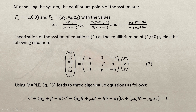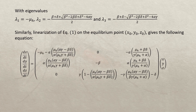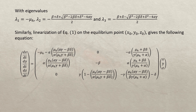Similarly, linearization of Equation 1 at the second equilibrium point (X-naught, Y-naught, Z-naught) gives another matrix equation. Again, we find the Jacobian, substitute the values of X-naught, Y-naught, Z-naught, and find the eigenvalues of the resulting coefficient matrix.